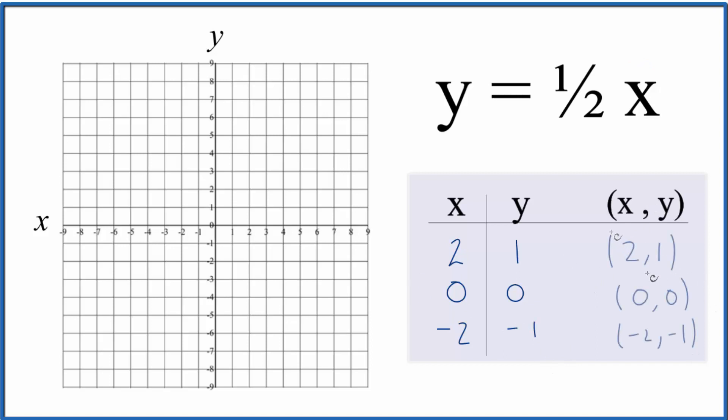So these are the points that we'll graph for our linear equation y equals one-half x. We could have put other values in, these just seem to work out to give us points that'll show right up on our graph here.